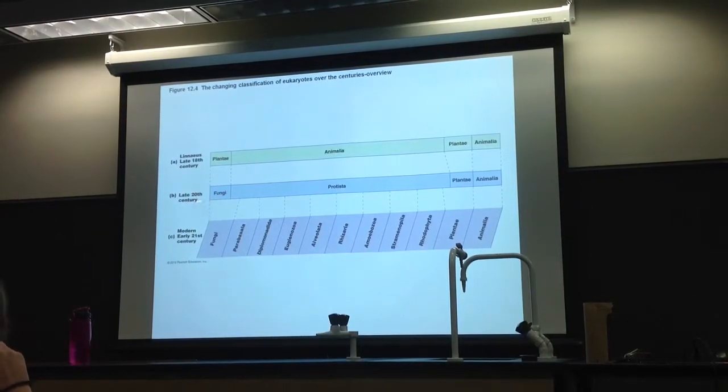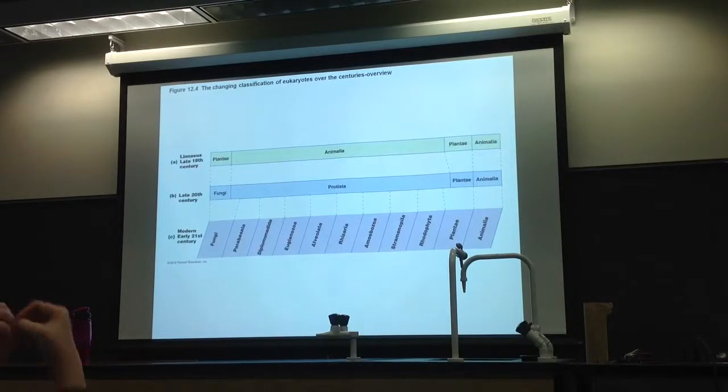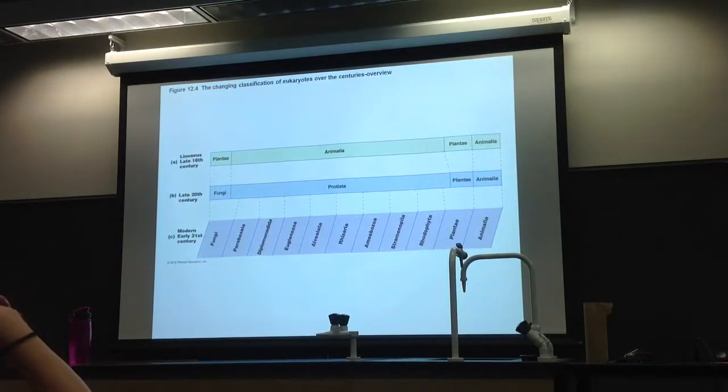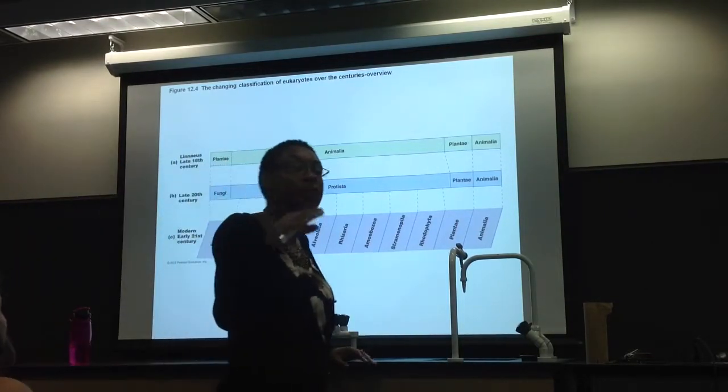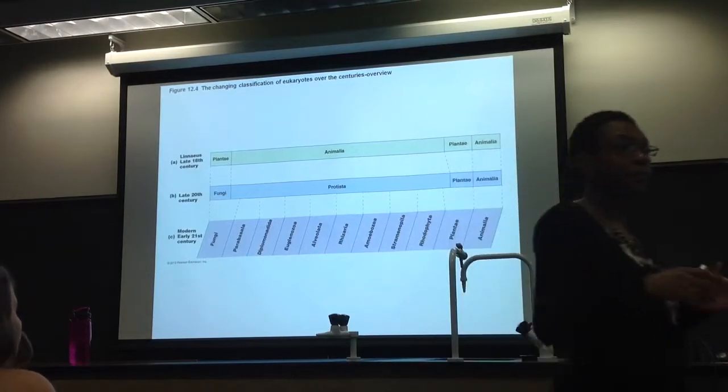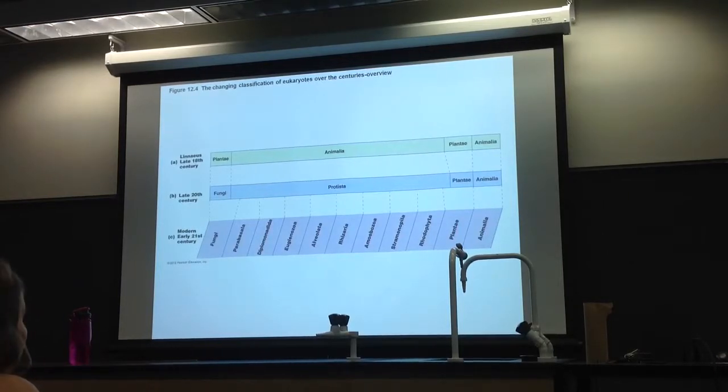Now, in the late 20th century, so last century, we had basically one, two, three, four kingdoms here, not including the bacteria. So we had fungi, protista, plants, and animalia. Now, kingdom protista basically was your catch-all kingdom. In other words, if you weren't a plant, if you were not an animal, if you were not a fungus, you got thrown into protista. So in other words, protozoans and algae, water molds and slime molds, all of them got thrown in here.